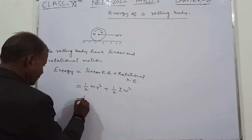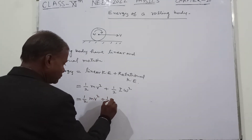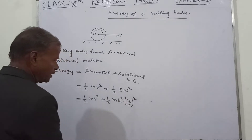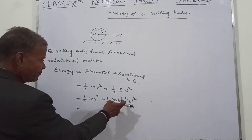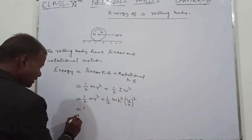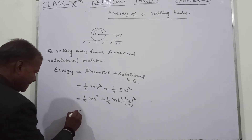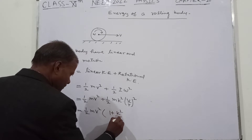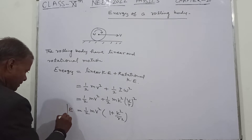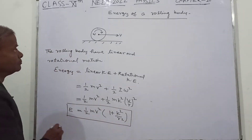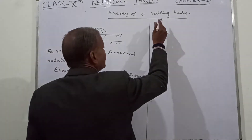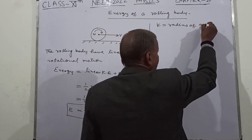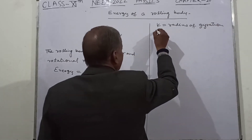We can substitute ω = v/r. So the total energy becomes one-half mv² plus one-half I(v/r)². Factoring out one-half mv², we get the total energy equal to one-half mv² multiplied by (1 + k²/r²). Here k is the radius of gyration and r is the radius of the body.